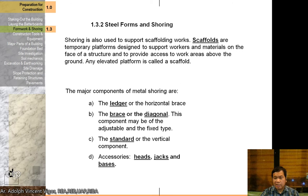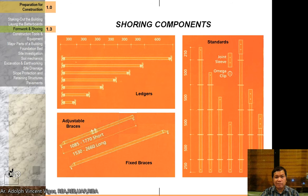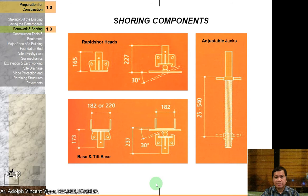The major components of metal shoring are the horizontal brace, the diagonal brace, the adjustable and fixed type, and the standard or vertical component. Accessories include ledgers, fixed braces, and adjustable braces. The base components include base plates, tilt bases, adjustable jacks, and rapid shore heads.